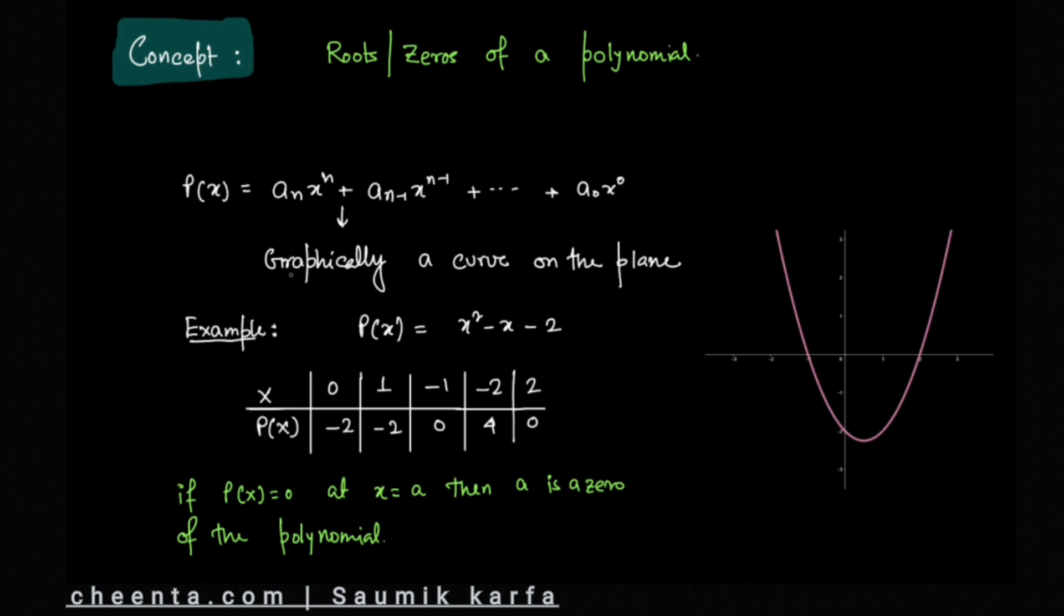Graphically, polynomials represent a curve on the plane, and depending on the coefficients and degree of the polynomial, that curve will change. Now let us understand the concept of root or zero of a polynomial using one example. I am considering p(x) = x² - x - 2. We will put some values for x and note their outputs, concentrating on the graph of this polynomial.